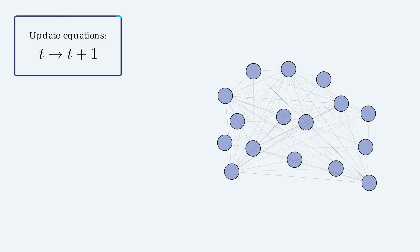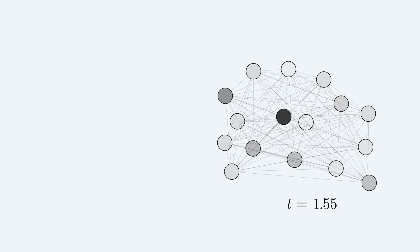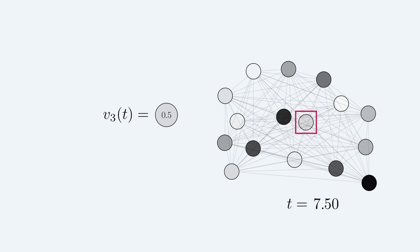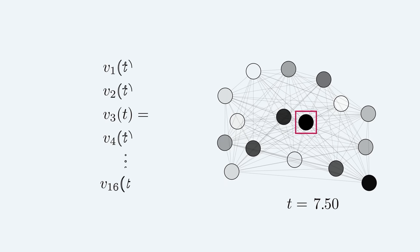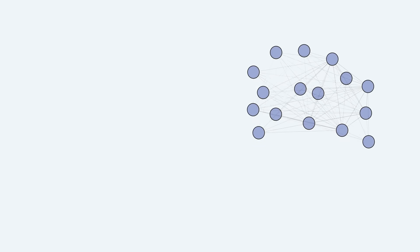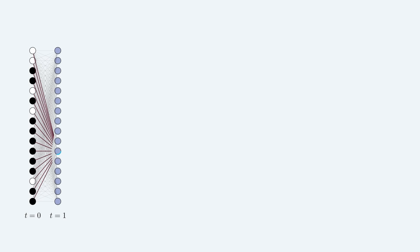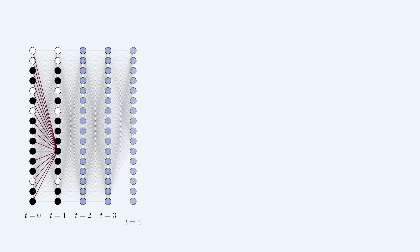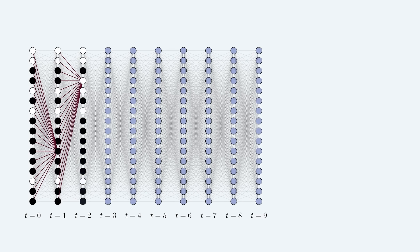The crucial ingredient of our network is that it is a dynamical system — its activity changes over time. Each of the 16 neurons in the network is described by a number that is a function of time, and let's assume time moves forward in discrete steps. Since we are interested in binary memory states, the neurons can only be in one of two states: inactive, say minus one, and active, say plus one. This leaves us with 16 minus or plus ones at any given time, which we call the state of the network. We select one neuron at random and update its state according to the input of all other neurons, while the rest stay the same.